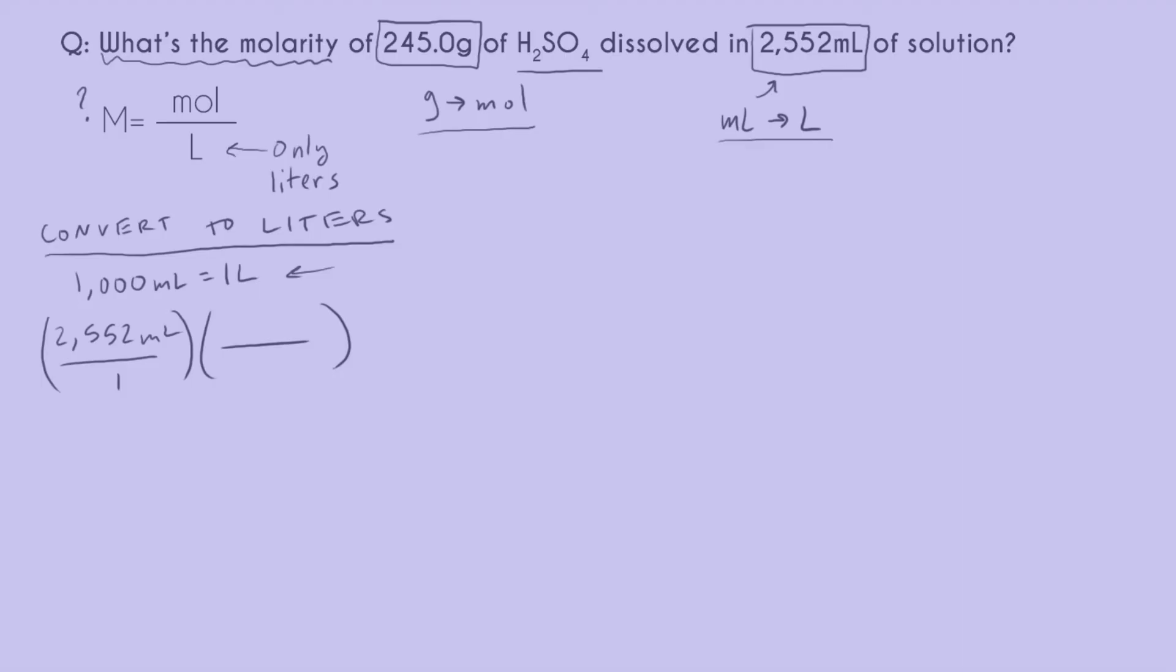Now we can set up our given number as a fraction and multiply by our conversion ratio that we have up here. We want to cancel out milliliters, so milliliters has to go on the bottom. This whole left hand side goes on the bottom, and then that means our right hand side goes on top. Now this cancels out. When I divide, I get 2.552 liters. Now I have one of my check marks.